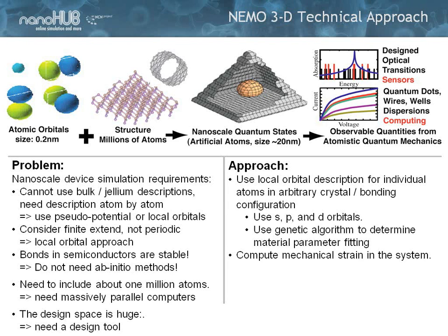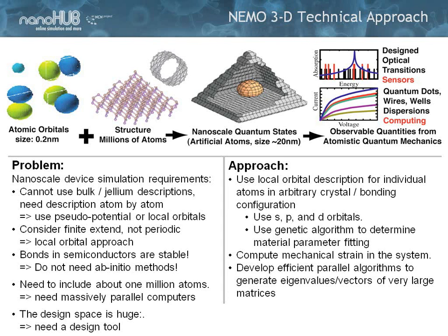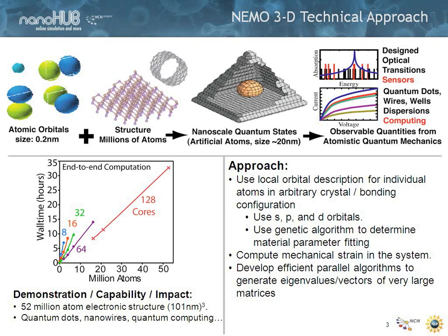Tight binding can handle the strain, and we developed a bunch of algorithms that allowed us to do that. About 3 to 4 years ago, we demonstrated a calculation of 52 million atoms electronic structure calculation. 52 million atoms is roughly 100 by 100 by 100 nanometers in chunk size — that's a modern field effect transistor with every atom, or a stack of quantum dots. That would run on 128 cores for about 34 hours — a hero experiment. My students typically operate at 48 to 64 cores for 10 hours, doing calculations for 10 million atoms on a day-to-day basis. That's our workhorse.